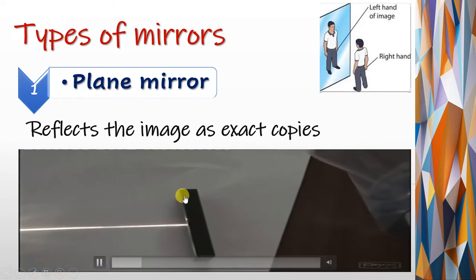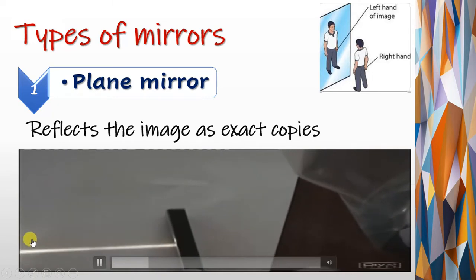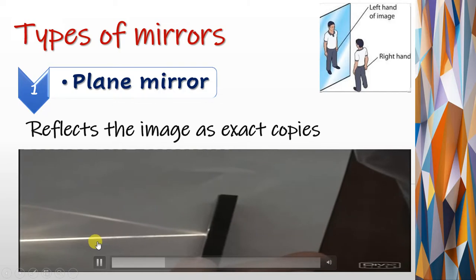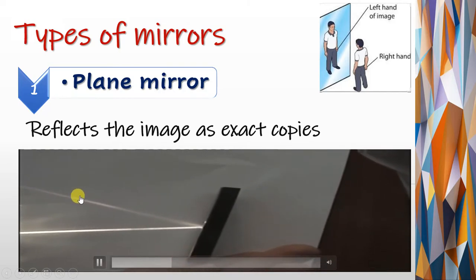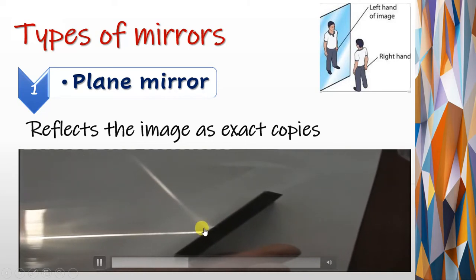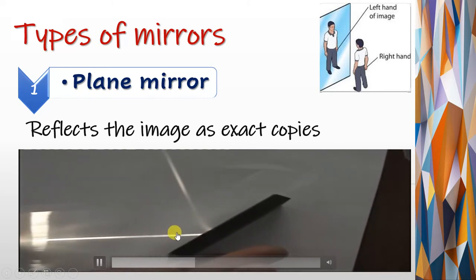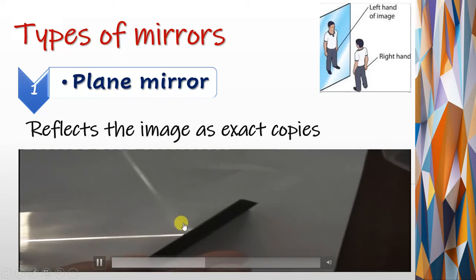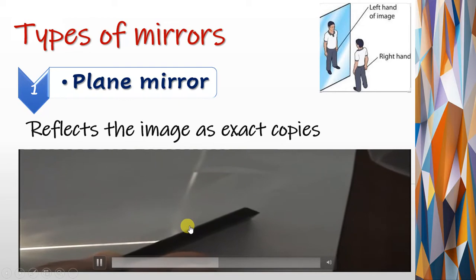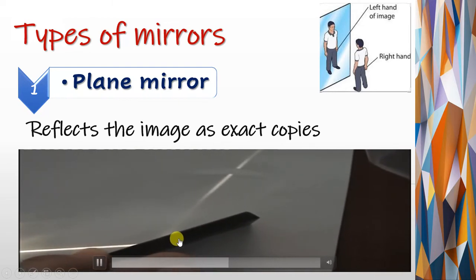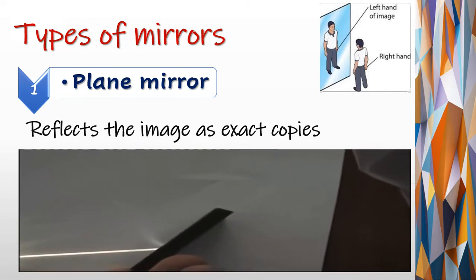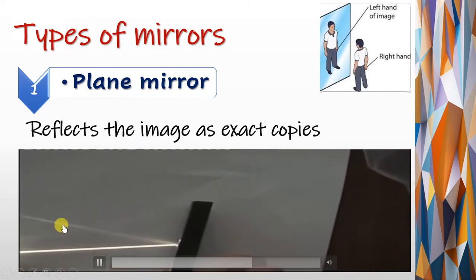As you see, this is a plane mirror and this is a light ray, or incident light ray — the white one. Look at the reflected ray, and as we said according to the law of reflection, the angle between the mirror and the incident ray equals the angle between the mirror and the reflected ray. This is a plane mirror.